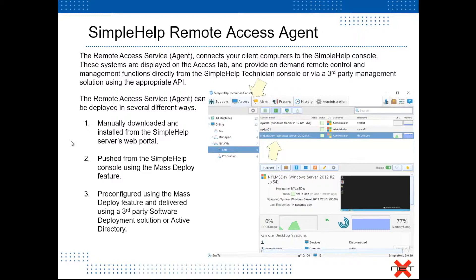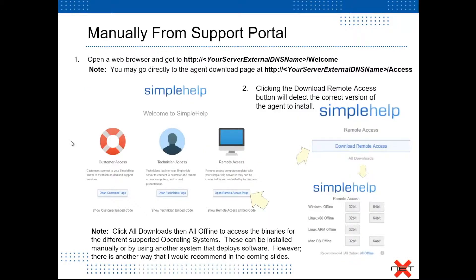I'm going to show you a couple of different ways to deploy the agent. The preferred method is pushing the agent from the Simple Help console using mass deploy. But I'll also show you the manual method because it has its uses. You can also pre-configure that agent using the mass deploy feature, download it, and deploy using a third-party deployment solution, Active Directory, or simply double-click on that agent to have it silently installed.